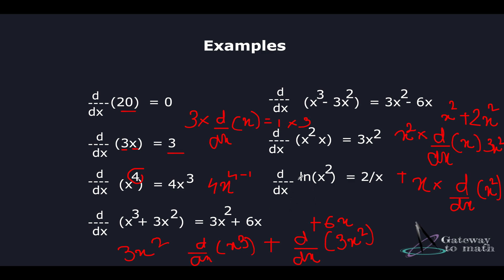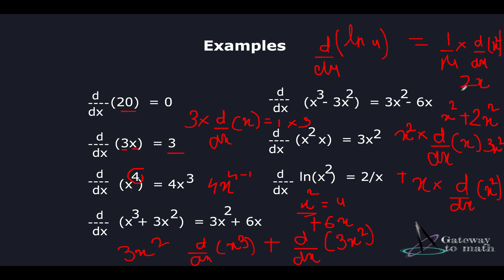The last example is the chain rule. Chain rule is one of the most important rules we will be using in later sessions. Let's replace x^2 with u, so the expression becomes log(u). Differentiating log(u) with respect to u gives 1/u. Then we independently differentiate x^2 with respect to x, which gives 2x. So the full expression becomes 2x divided by u, and since u equals x^2, substituting gives 2x/x^2, which simplifies to 2/x.